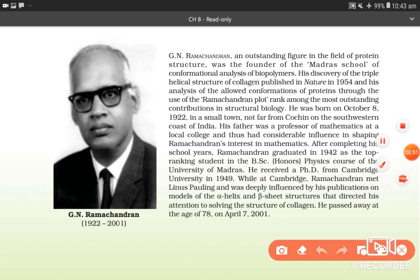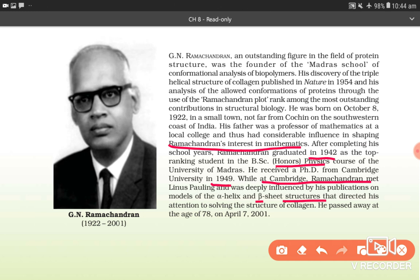He was born on 8 October 1922 in a small town not far from Cochin on the southwestern coast of India. His father was a professor of mathematics at the local college and had considerable influence in shaping Ramachandran's interest in mathematics. After completing his school years, Ramachandran graduated in 1942 as the top-ranking student in the BSc Honours Physics course of the University of Madras. He received a PhD from Cambridge University in 1949. While at Cambridge, Ramachandran met Linus Pauling and was deeply influenced by his publications on models of the alpha helix and beta sheet structures, which directed his attention to solving the structure of collagen.